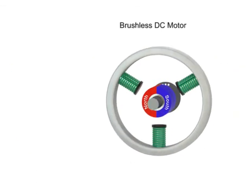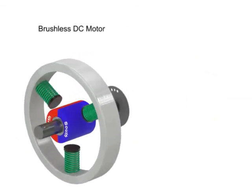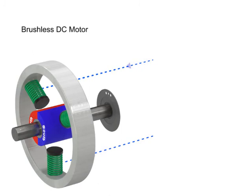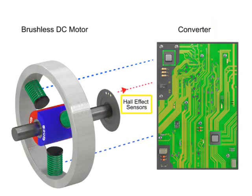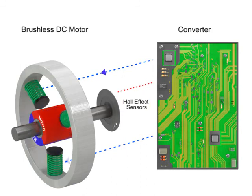A rotating magnetic field is formed by electrical pulses generated by a converter. As the rotor turns, a rotor position sensor provides feedback to the converter so the required stator field rotational sequence is maintained.